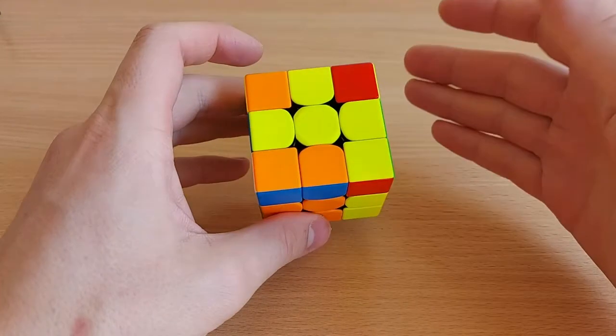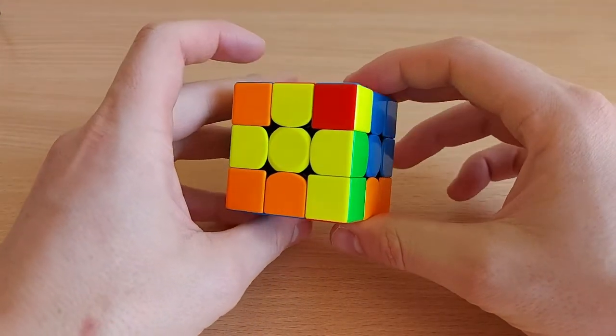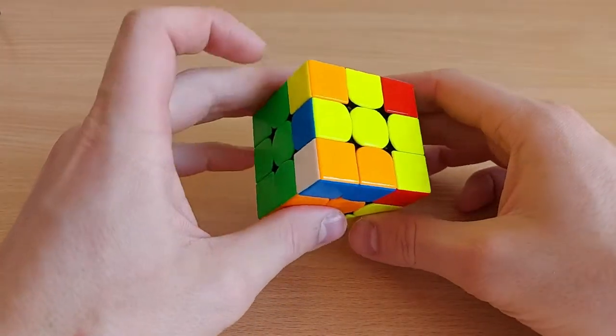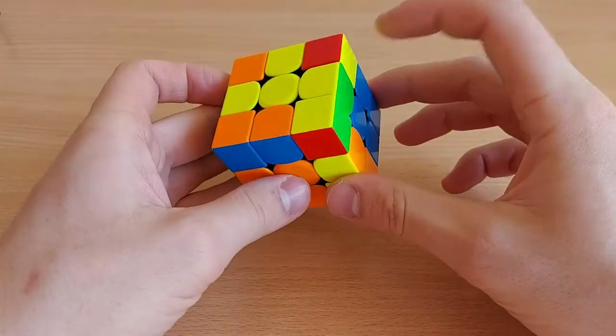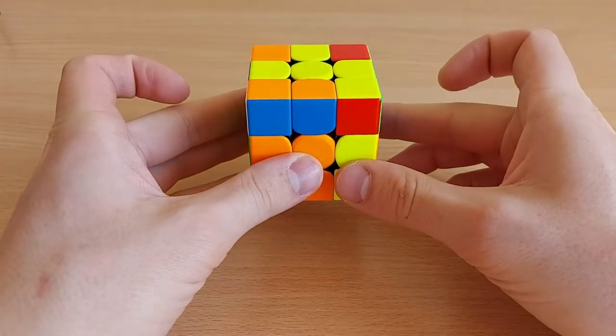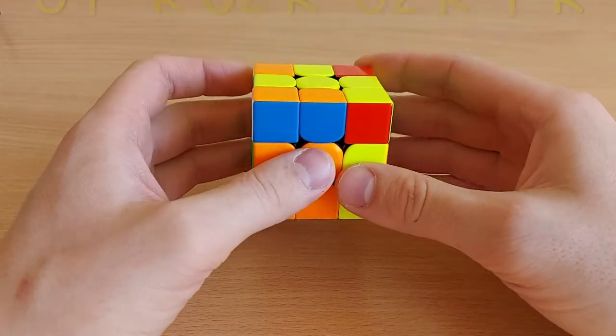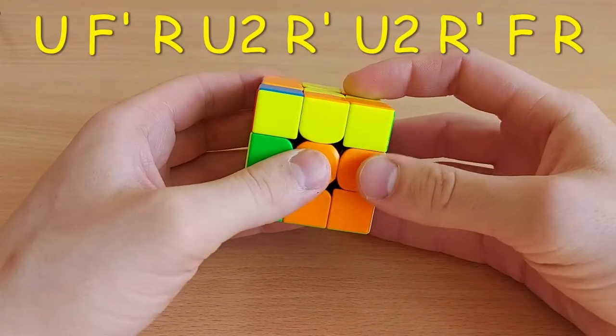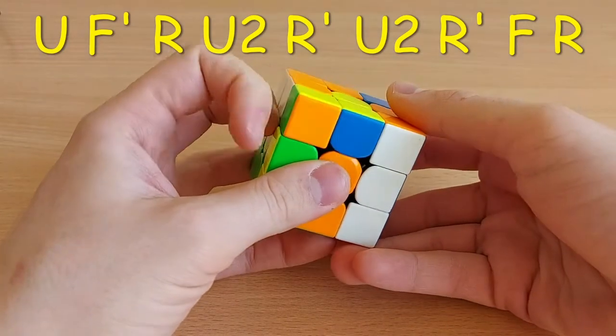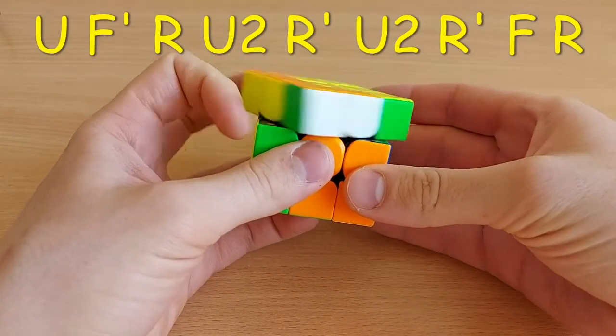I showed you three other shotgun shapes, and this one is the last. This one has these two stickers facing to the sides, and from this angle what you can do is: U F' R U2 R' U2 R' F R.